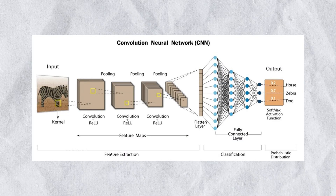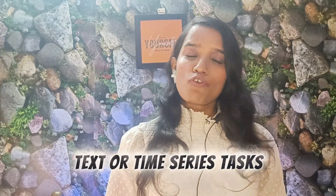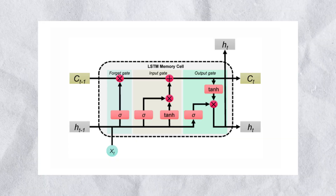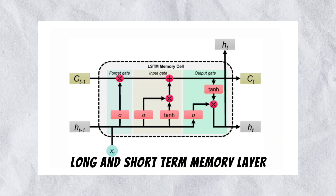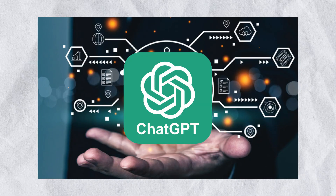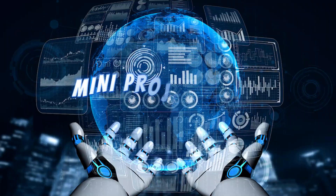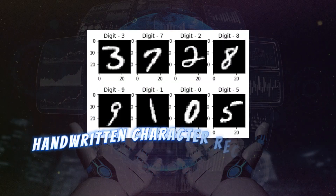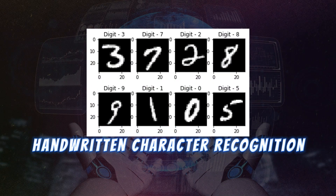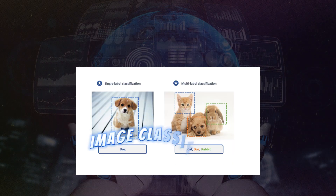Start with feed-forward or artificial neural networks for the basics, then move to CNNs — convolutional neural networks — for image-based tasks. For text or time-series tasks, go for RNN (recurrent neural network) or LSTM (long short-term memory) layers. Finally, transformers, which power modern AI like ChatGPT. Mini-project ideas include handwritten character recognition, sentiment analysis of tweets, and image classification.